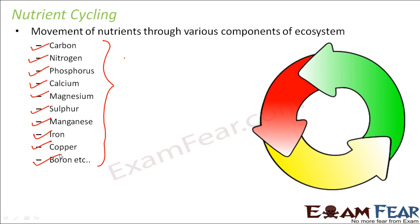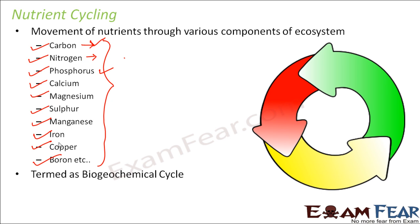In this lesson we will discuss the phosphorus cycle and the carbon cycle. These nutrient cycles are also called biogeochemical cycles. 'Bio' means life, 'geo' means earth, and 'chemical' means chemicals. Since these nutrients are being transferred between various life forms on the earth, they are called biogeochemical cycles.